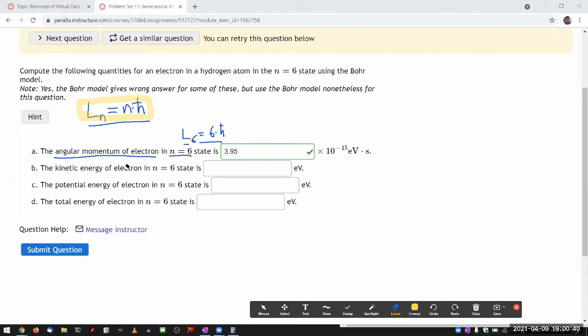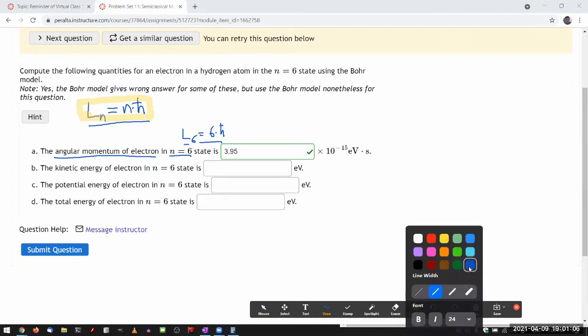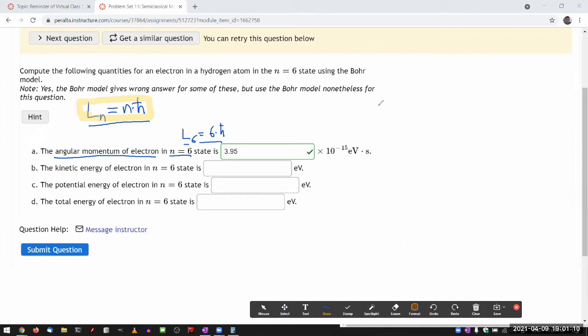Where's the kinetic energy of the electron in n equals six state? I'll tell you the expression first that leads to the answer. You have that expression for the energy of the electron in the state characterized by n, that's given by minus 13.6 eV divided by n squared. The thing to understand here is that this energy is the total energy, meaning this is the energy that you get by the sum of the potential energy plus the kinetic energy.